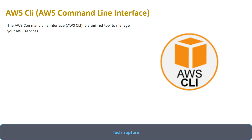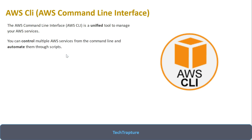It is not the case that you need to install a separate CLI for S3 bucket, separate CLI for EC2, separate for RDS. No, that is not the case. It is a unified tool, meaning using a single CLI you can manage all your AWS services. You can control all services and you can automate through scripts.